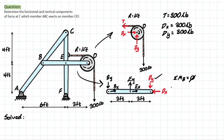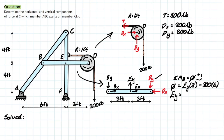With Dy solved, we can solve for Ey. By our convention, Ey acts upward (counterclockwise, positive) and is three feet from point B. Dy acts in the opposite direction at 300 pounds and is six feet from B. Bringing this over: 300 × 6 ÷ 3 = 600 pounds. So Ey = 600 pounds.